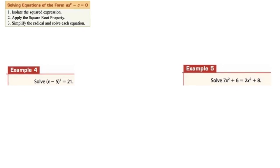Here's your step-by-step for solving equations in the form ax squared equals c: first, isolate the squared expression; second, apply the square root property; third, simplify the radical and solve. Now let's do example four.